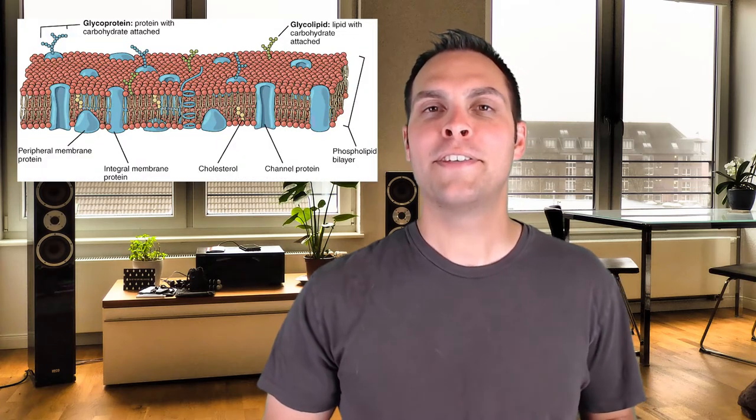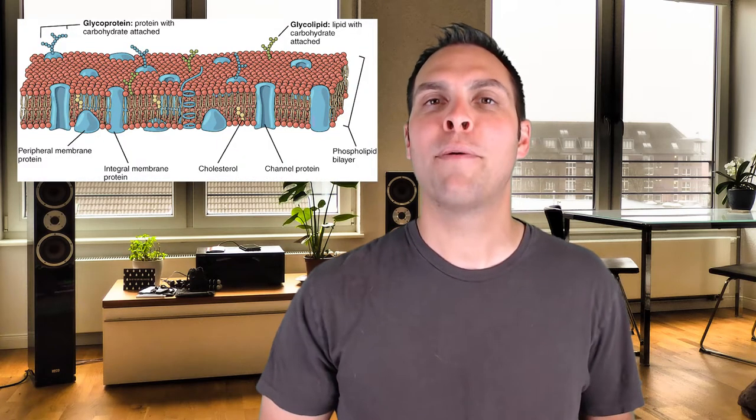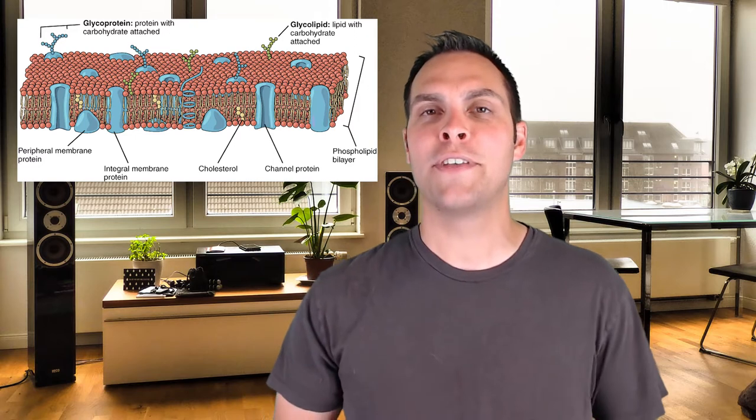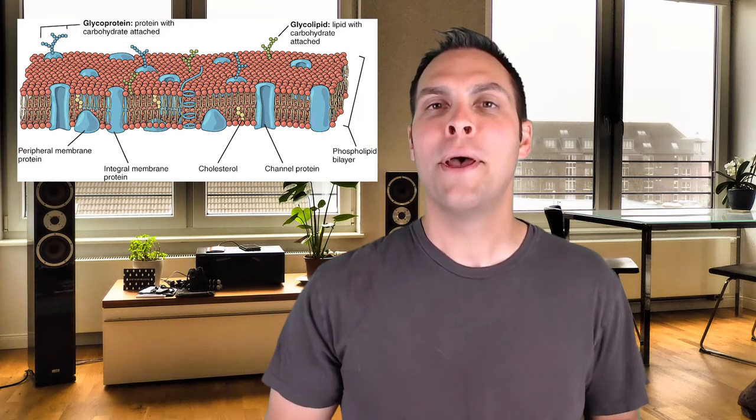Hi, and thanks for tuning in. Today we're talking about transport, which is a discussion about how we get things across plasma membranes and into and out of cells. All cells are surrounded by a plasma membrane — this selectively permeable barrier prevents things from getting into the cell as well as things from getting out.